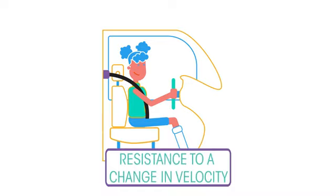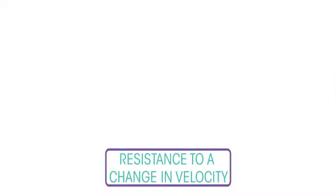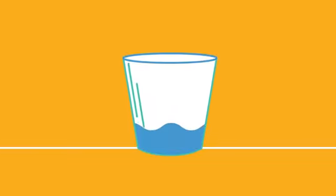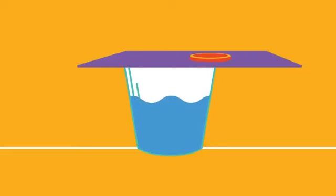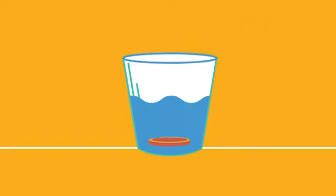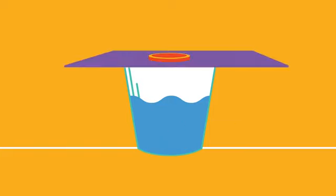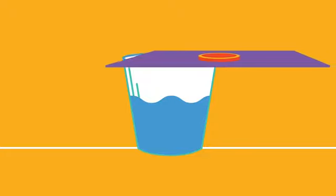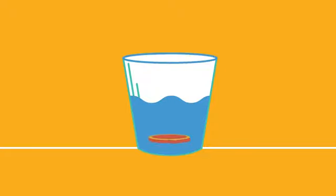We can demonstrate inertia using the following experiment. You will need a glass or a cup of water, a coin, and a piece of card. When the card is pulled, the coin falls into the glass. This is because the inertia of the coin maintains its state at rest, and as long as the friction between the card and the coin is not too high, it falls into the glass due to gravity.